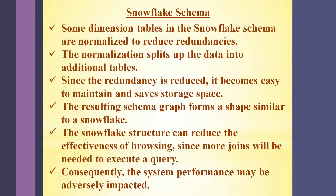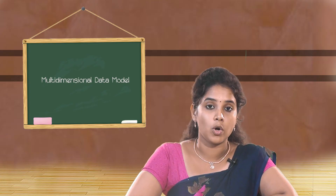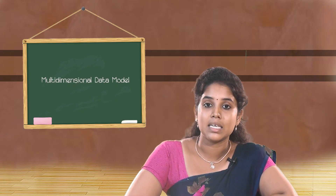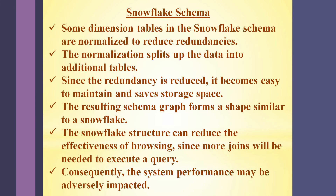Now let us move on to snowflake schema. Snowflake schema is similar to star schema since it also contains a single fact table at the center. The key difference between snowflake schema and star schema is the concept of normalization. Normalization splits the data into additional tables and is introduced to reduce data redundancy. In a snowflake schema, dimension tables can be split into additional dimension tables. Since data redundancy is reduced, snowflake schema helps save storage space, but system performance might be adversely impacted since more joins will be required to execute a query.